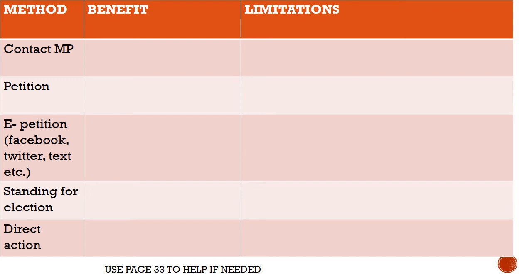There was an eight-mark question on this, so make sure you can argue backwards and forwards on each method. Petitions are good because you can get a large number of signatures — with an e-petition, if you reach 100,000 signatures it can be debated in parliament and lead to laws being changed. The limitations are that e-petitions have become too popular; there are thousands of similar ones competing with each other, diluting their impact.